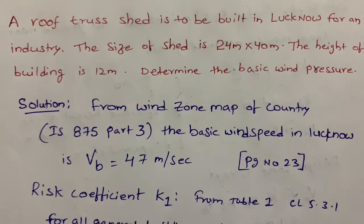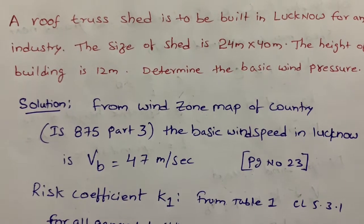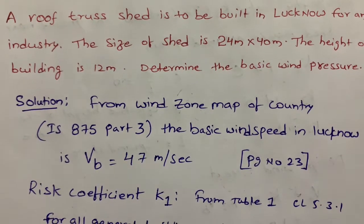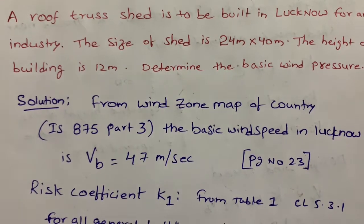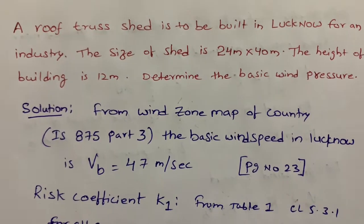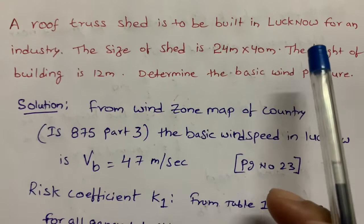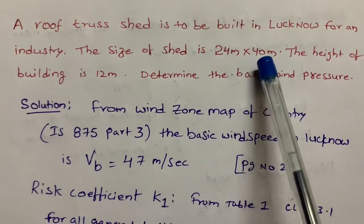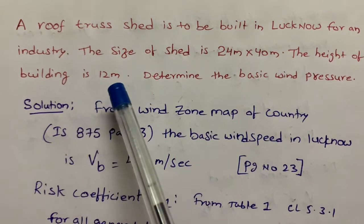Hello everyone, in this video I will show you a roof truss problem to determine the basic wind pressure. The given problem is: a roof truss shed is to be constructed in Lucknow for an industry. The size of the shed is 24 meters by 40 meters, the height of the building is 12 meters.